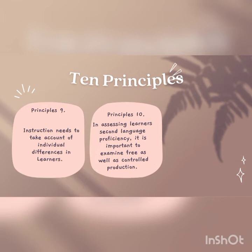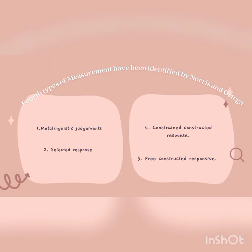Principle ten: in assessing learners' second language proficiency, it is important to examine both free and controlled production. In this principle, four types of measurement have been identified. First, metalinguistic judgment — for example, assessing whether a sentence is grammatically correct. Second, selected response — for example, multiple choice. Third, constrained constructed response — for example, fill-in-the-blank exercises and assessments.